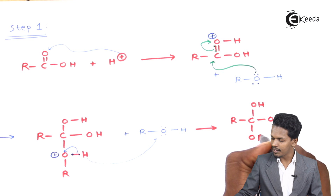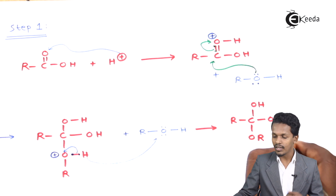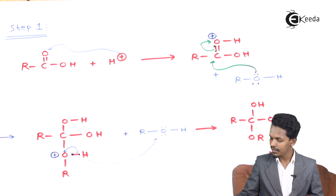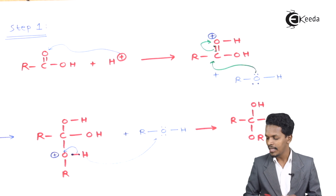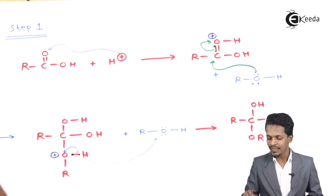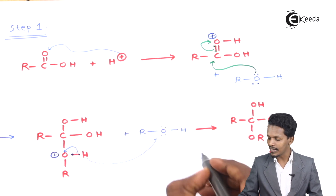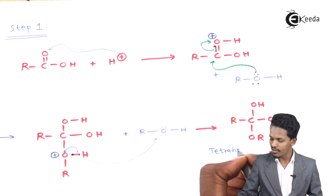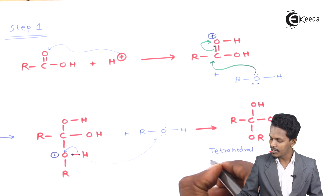The resulting product is RC(OH)₂(OR'), known as the tetrahedral intermediate, along with a byproduct of R'OH₂⁺. The tetrahedral intermediate is the main product of Step 1.